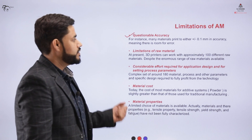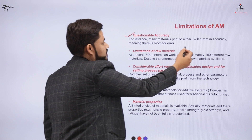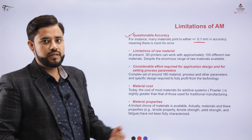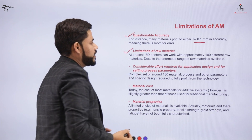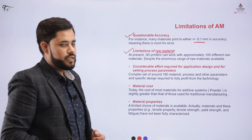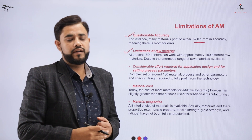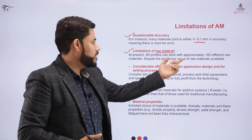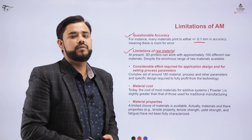Apart from the advantages, the process has certain disadvantages and limitations. Number one: the accuracy can be objectionable — for many materials the accuracy is plus or minus 0.1 mm, meaning there is some room for error. There is also a limitation on raw materials; only specific raw materials can be used, approximately 100, which is limited.